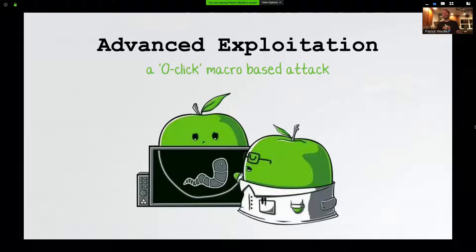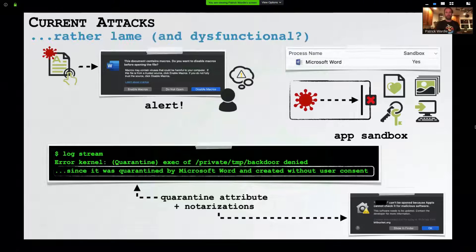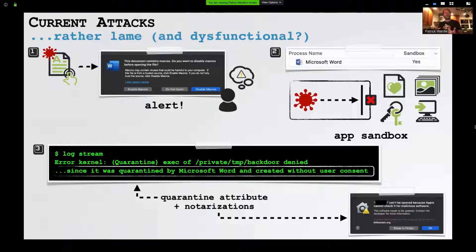Now let's switch gears and talk about a new zero-click macro-based exploit chain. Current attacks are rather lame. First and foremost, if the user opens a document containing malicious macros, Office will show an alert and the user will have to click enable macros manually — most users won't do that, so the attack is stopped right there. Also, Microsoft has patched Adam's sandbox bug, so all current attacks remain sandboxed. And in Catalina, due to quarantine and notarization, payloads executed even in the sandbox may be blocked. So in reality, current attacks are almost useless and very unlikely to succeed.